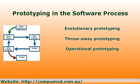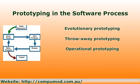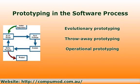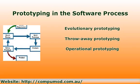The system is then developed using some other development process. Operational prototyping is used when requirements are either critical and well understood, or not critical and poorly understood. Throw-away prototypes are selectively built on top of an evolutionary prototype.